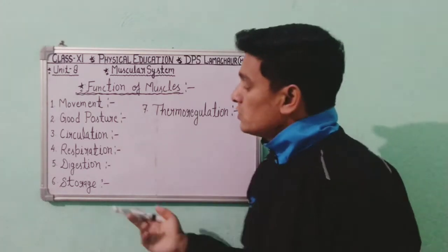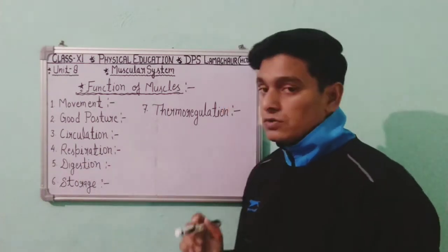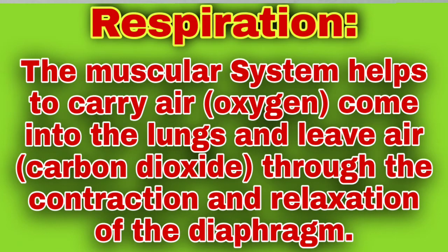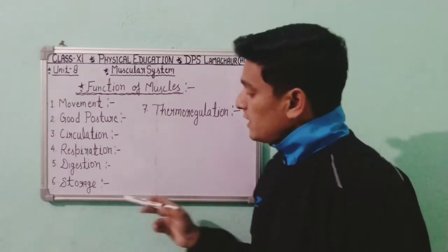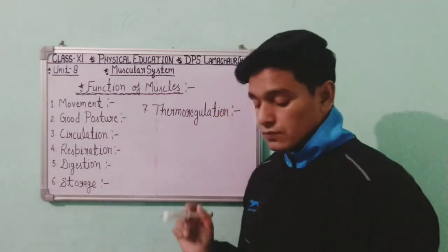The fourth function is respiration. The muscular system helps to carry air — oxygen — into the lungs and release air — carbon dioxide — through the contraction and relaxation of the diaphragm. The diaphragm is part of the respiration system and muscles help in breathing.